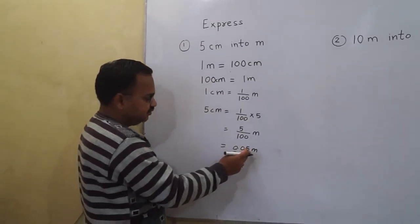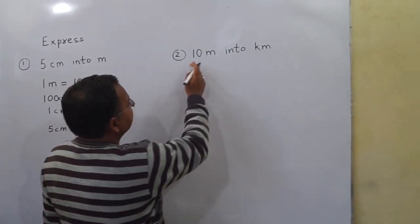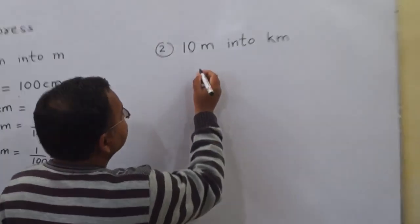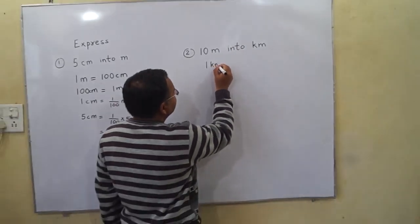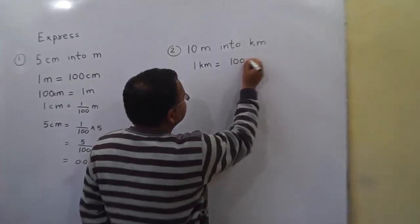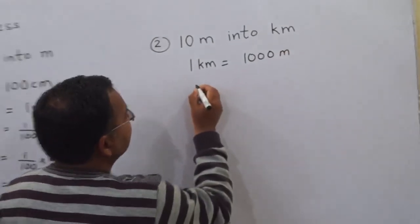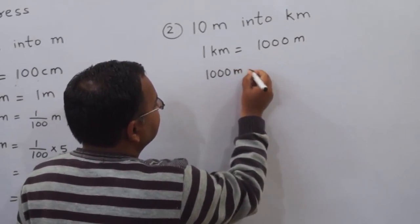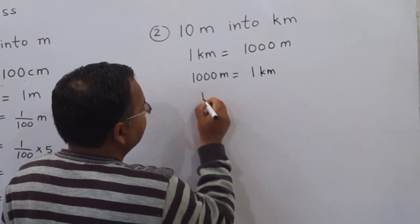The answer is 0.05 meter. So five centimeters is equal to 0.05 meter. Our next sum is 10 meters into kilometers. We know that one kilometer is equal to one thousand meters.